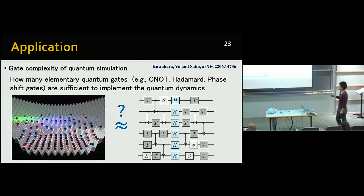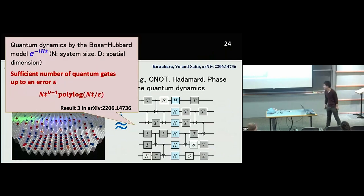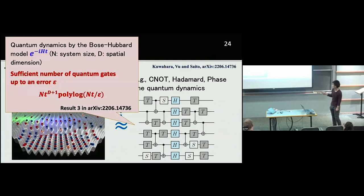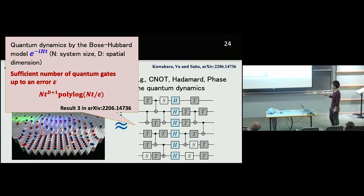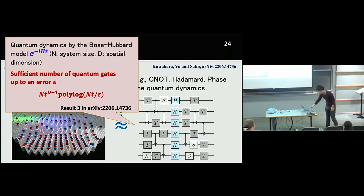As one application, we show the gate complexity of quantum simulations. The gate complexity asks how many elementary quantum gates are sufficient to implement the quantum dynamics. Using the Haah-Hastings-Kothari-Low algorithm technique, we characterize the sufficient number of quantum gates up to some error epsilon, which is given by N times T to the power of D+1 times log(NT/epsilon). This is sufficient for an efficiency-guaranteed simulation of quantum many-body Bose-Hubbard models. As far as I know, this is the first result achieving an efficiency-guaranteed algorithm for Bose-Hubbard type models.